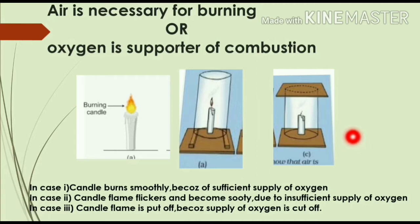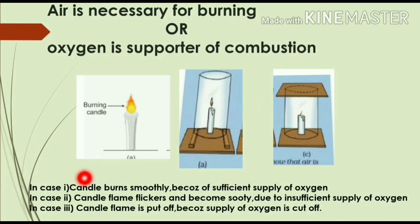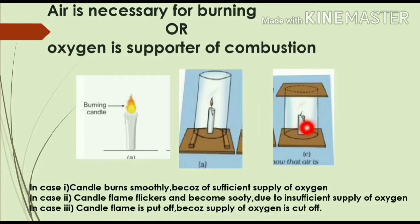In the first case, the candle burns smoothly. In the second case, a chimney is placed over the candle — the flame flickers and burns unsteadily, and the inside of the chimney becomes sooty with black smoke. In the third case, a cardboard piece is placed over the chimney, cutting off airflow, and the candle flame goes out.